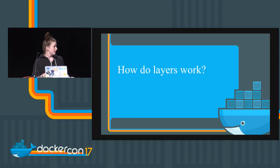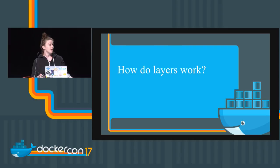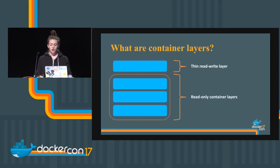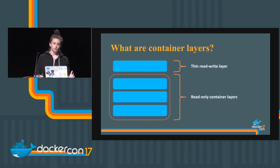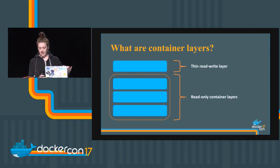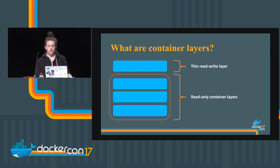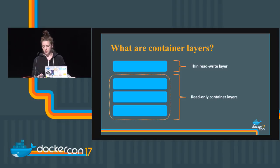So how do layers work? Before we start covering tips for how we can have fewer layers, let's talk about what layers actually are. You have the read-only container layers that make up the base operating system — Ubuntu, CentOS, or whatever. These read-only layers make up your base image. Anything you do with your container on top of that gets added to a thin read-write layer. If you emit data, write things, or get files, those all go to that thin read-write layer, which gets stacked on top of your read-only container layers.